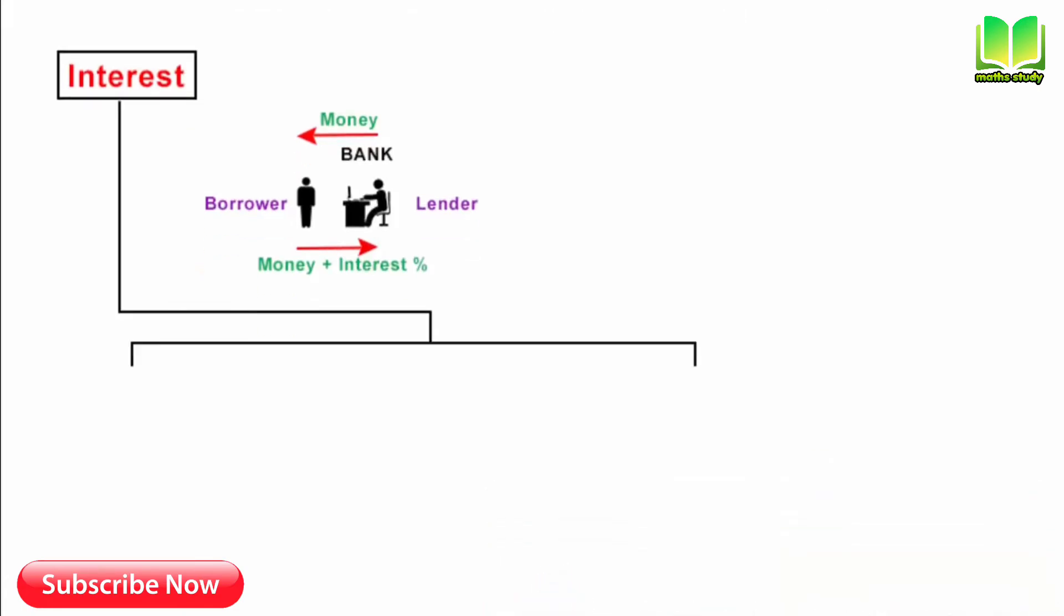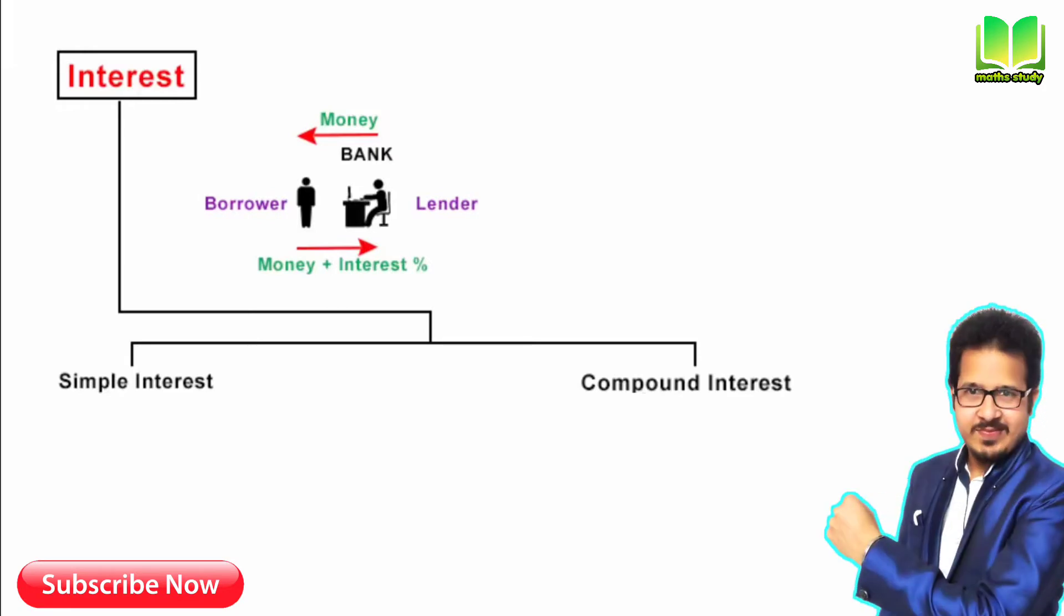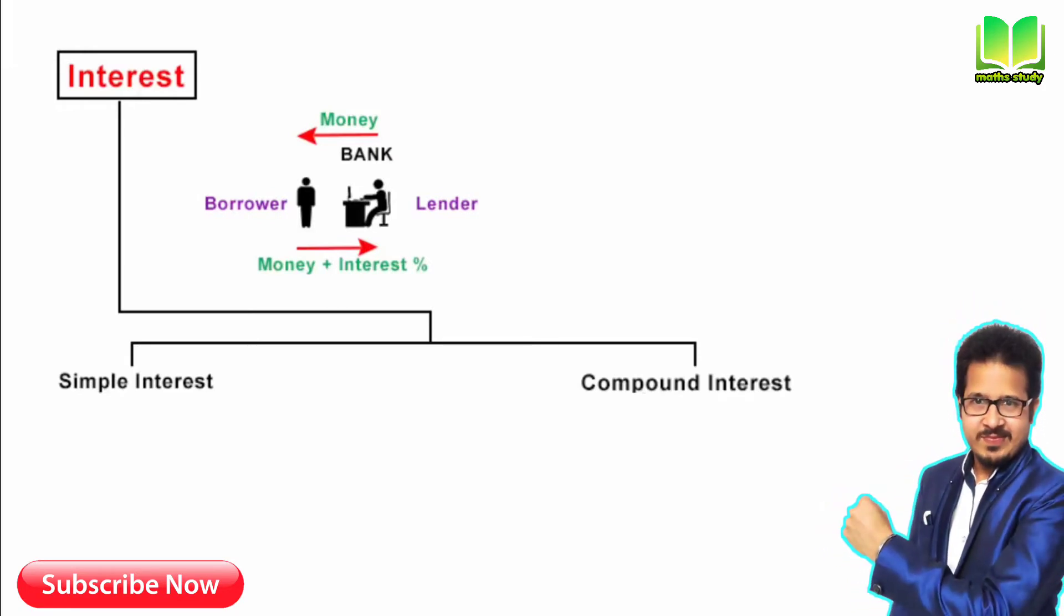Now this interest is of two types: simple interest and compound interest. Let's understand the first one, simple interest. By the name itself, it means that this interest is a pretty simple and straightforward interest rate.